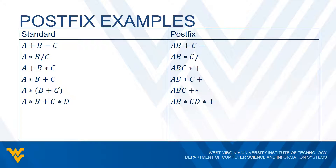For A times B plus (C times D), we do A times B first, then C times D, and take the two results and add them together. The postfix notation is A, B, times — evaluating that part first — then C, D, times — evaluating that part — and finally a plus to add the two results together.